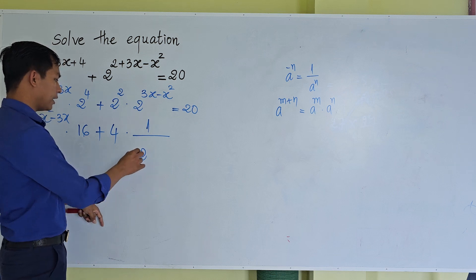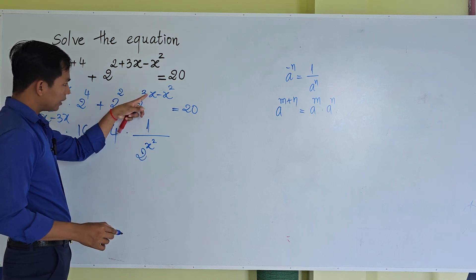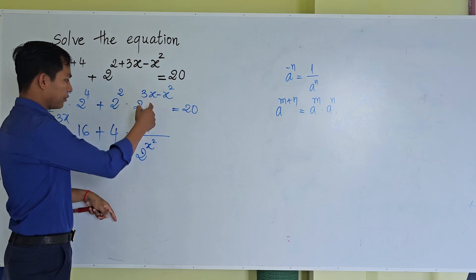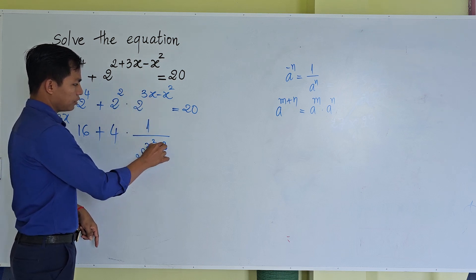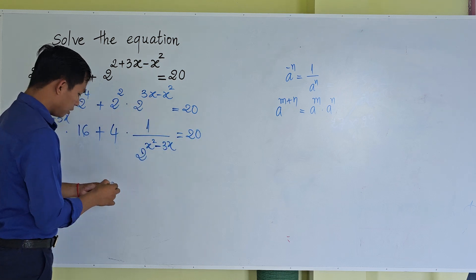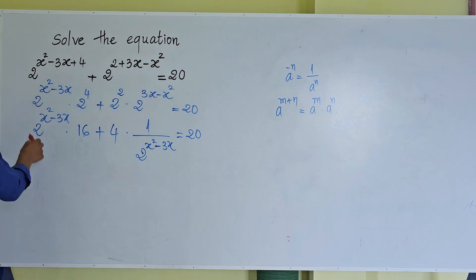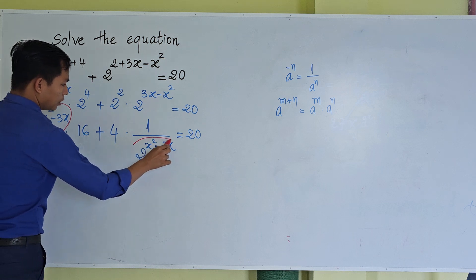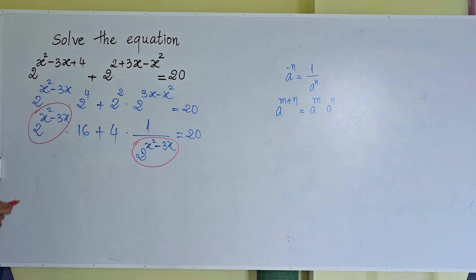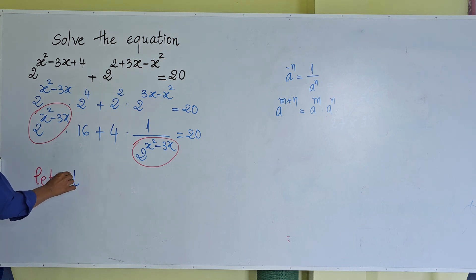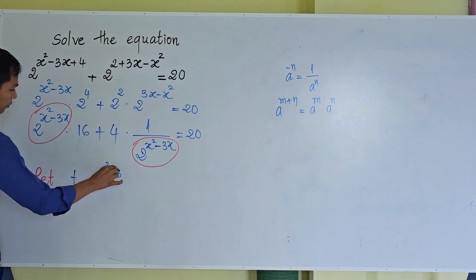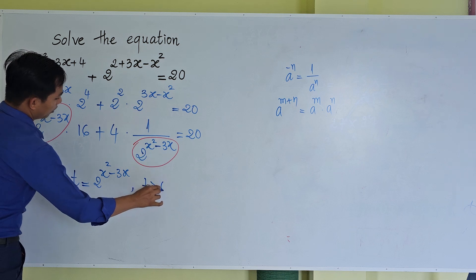After moving terms to the end and simplifying, we get 16 · 2^(x²-3x) + 4 · (1 / 2^(x²-3x)) = 20. Now notice that both terms contain 2^(x²-3x), so we let t = 2^(x²-3x), where t is always positive.